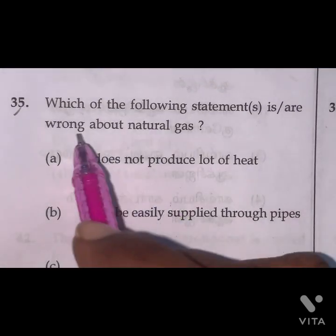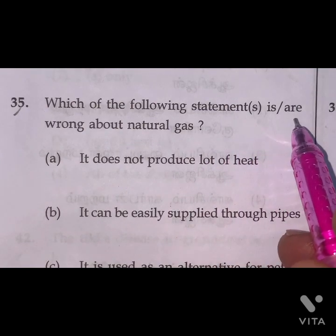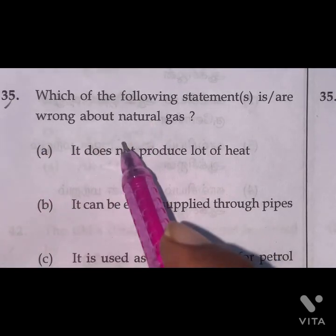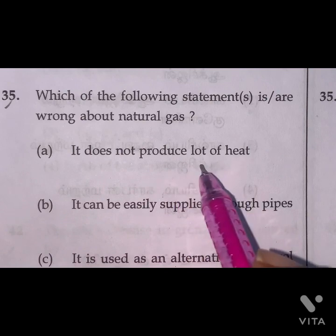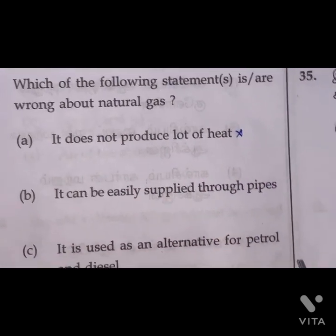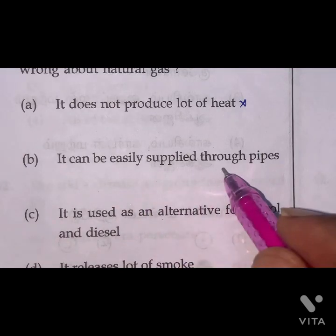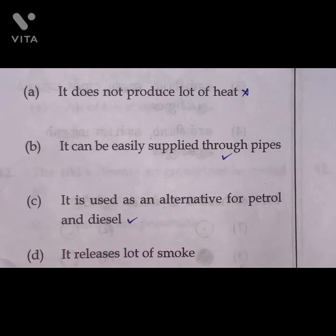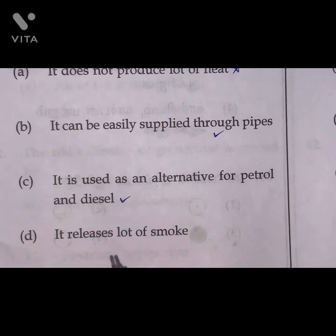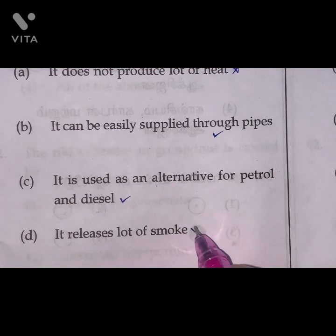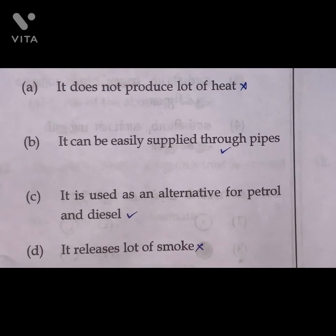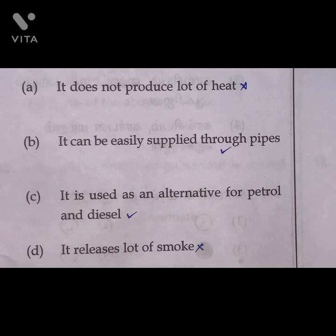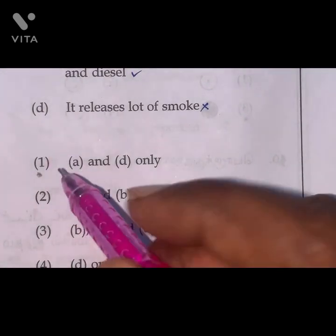Question 35: Which of the following statements are wrong about natural gas? Statement A — it does not produce a lot of heat — is a wrong statement. Statement B — it can be easily supplied through pipes — is a right statement. Statement C — it is used as an alternative for petrol and diesel — is also a right statement. Statement D — it releases a lot of smoke — is a wrong statement. So A and D are the wrong statements. Option 1 is the right answer.